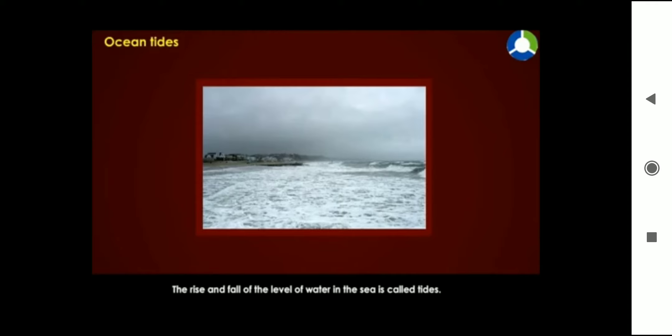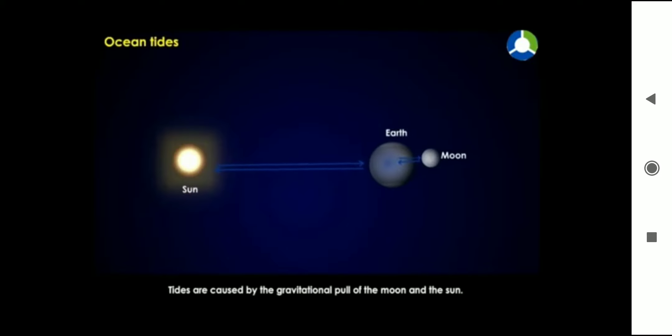Rise and fall of the level of water in the sea is called tides. Tides are caused by the gravitational pull of the moon and the sun.